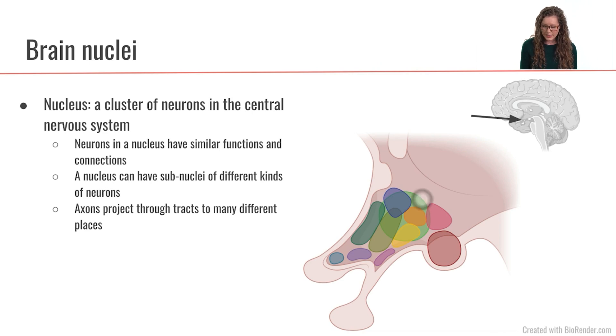Now when we're looking at one individual nucleus within the brain, it can actually have sub-nuclei within it or smaller clusters within that nucleus. And so that's something that we are going to talk about when we are learning more about this particular nucleus right here called the arcuate nucleus.